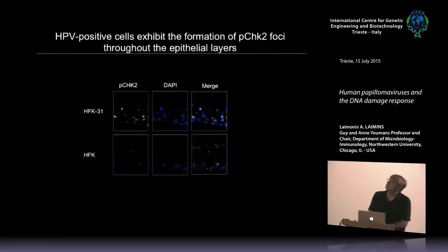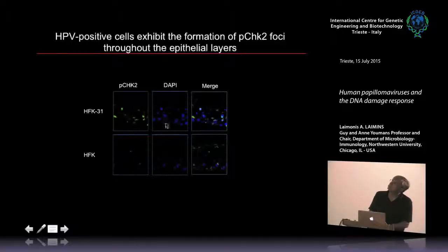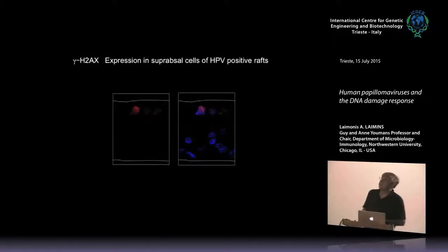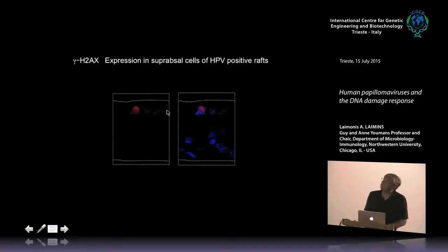This also happens in raft cultures. In cross-sections stained with DAPI for nuclei, phospho-CHK2 is distributed throughout all layers of HPV-positive cells, as seen with calcium-induced differentiation. In normal HFKs there's really no turning on of these signals. Similarly, there's a dramatic increase in the activated histone H2AX only in the differentiated cells—at the top of the raft where viral amplification is taking place—with much more dramatic levels up there compared to the bottom.